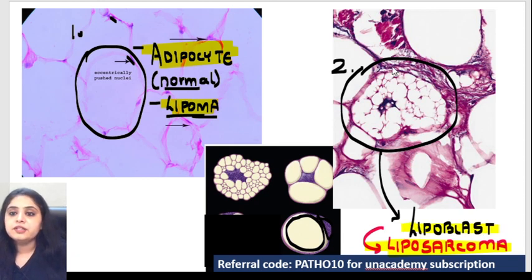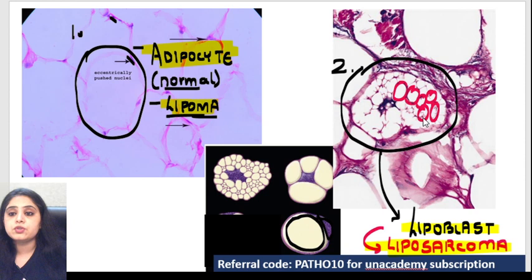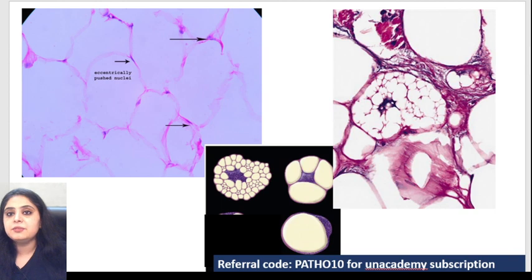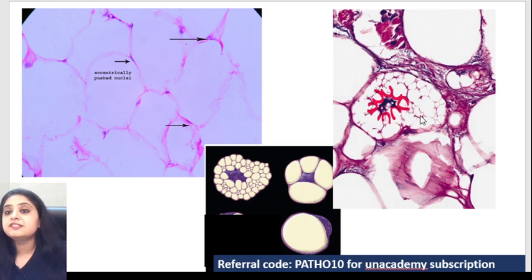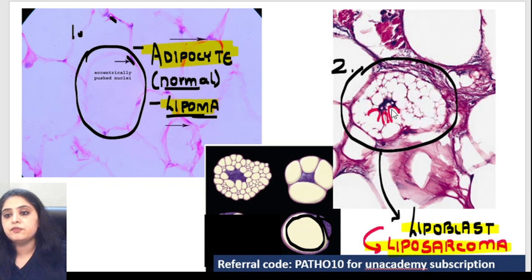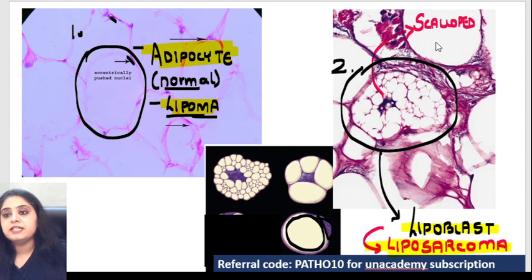And how does a lipoblast look like? Here you have this huge cell with multiple white spaces — these are all fat globules, that is why they appear totally clear. And if you see the blue colour nucleus in the centre, it looks as if someone is punching — all these fat globules are punching that nucleus from all around. Again it looks as if the nucleus is being punched by these fat globules. So we call this a scalloped nucleus. This kind of nucleus is known as a scalloped nucleus.